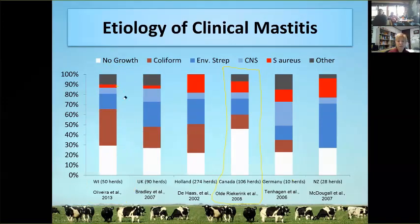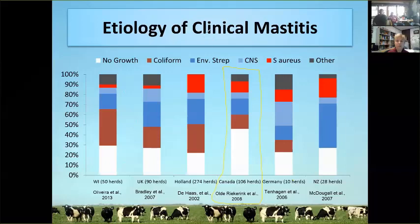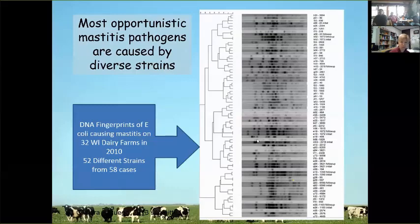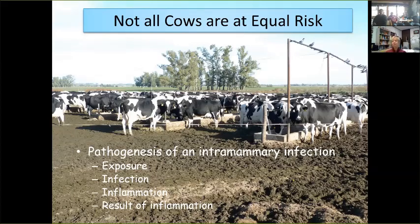When we look at controlling environmental mastitis, we're looking at controlling exposure. Not all cows are at equal risk. You could put two cows in the same environment and both don't have the same risk of infection, because the teats of cows are constantly exposed to bacteria. In a healthy cow in positive energy balance with good teat condition, most of the time the cow's immune system will successfully fight off those infections.